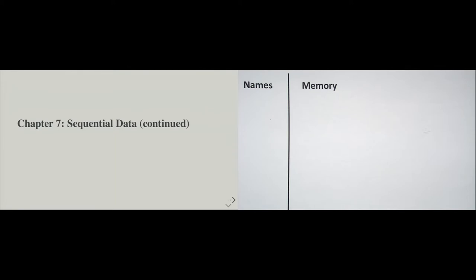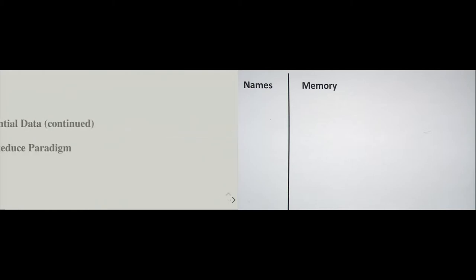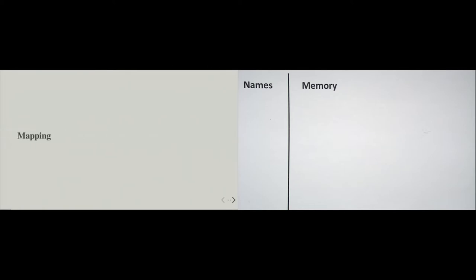In Chapter 2 we defined a function called average_evens, and when we visualized it, we had not only the original numbers list in memory but also up to three copies of it — that used a lot of memory. The question is: can we do better? And the answer is yes. We will do so by formally introducing the map-filter-reduce paradigm, which we briefly saw at the end of Chapter 4. In Chapter 7 Part 2, we will also look at data types that allow us to model data that doesn't exist in memory.